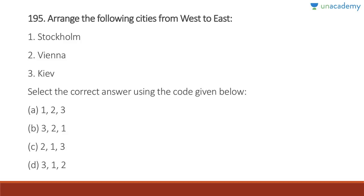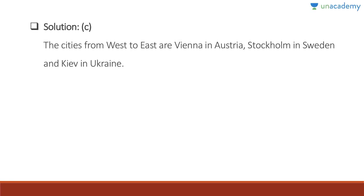Question 195: Arrange the following cities from west to east: Stockholm (Sweden), Vienna (Austria), and Kyiv (Ukraine). The westernmost is Vienna, slightly east is Stockholm, and Kyiv is close to Russia. The answer is two, one, three — Vienna, Stockholm, Kyiv. Answer is C.